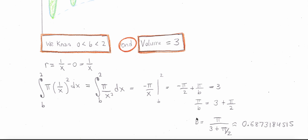Solve this equation for b, and I get b is exactly pi over 3 plus pi over 2, which is about 0.687, which is nice because that's exactly where it's supposed to land, between 0 and 2.